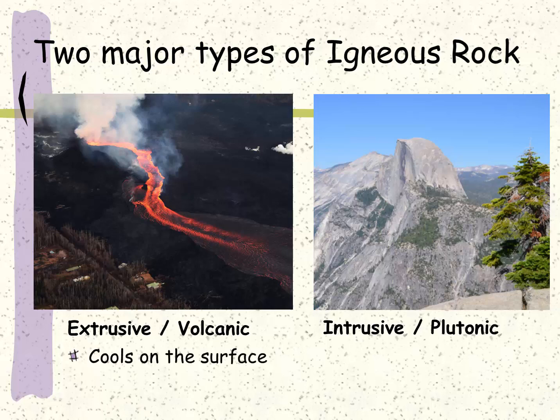The extrusive rocks, also known as volcanic rocks, are distinct in that the rock comes up as liquid and cools on the surface of the earth. On the other hand, the intrusive or plutonic rocks — plutonic deriving its name from Pluto the god of the underworld — these are rocks that cool below the surface of the earth.